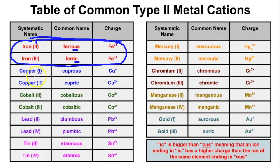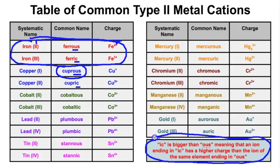There are two copper ions: copper 1 with a positive 1 charge and copper 2 with a positive 2 charge. Using common names, copper 1 is cuprous — referring to the ion with the lowest charge — and copper 2 is cupric — the higher charge. Similarly, cobaltous is plus 2 while cobaltic is plus 3; plumbous is plus 2 while plumbic is plus 4.